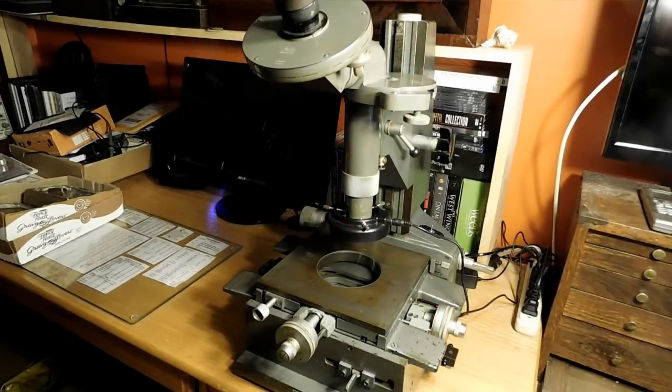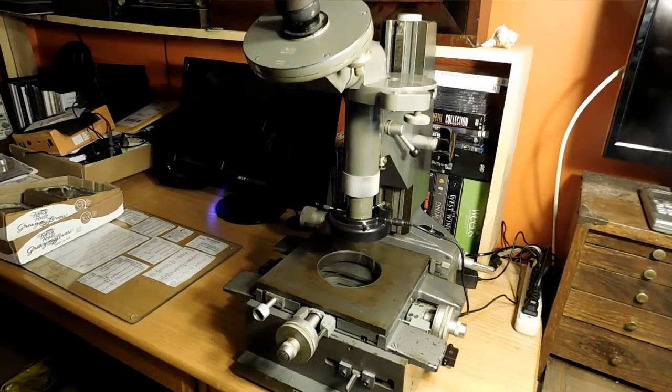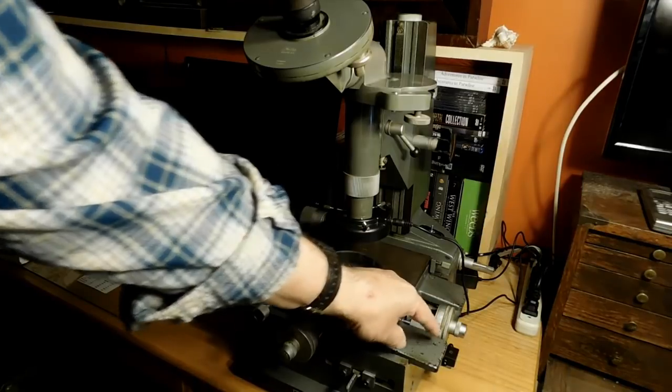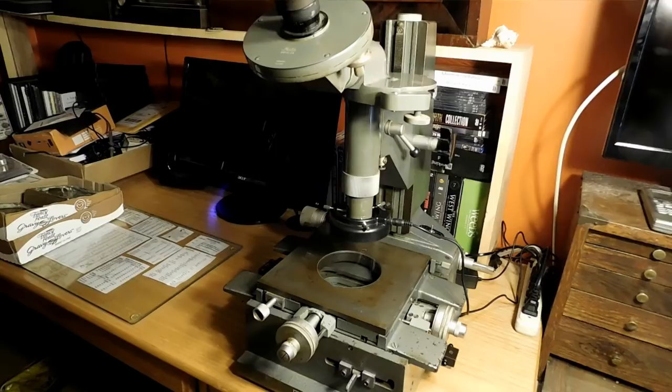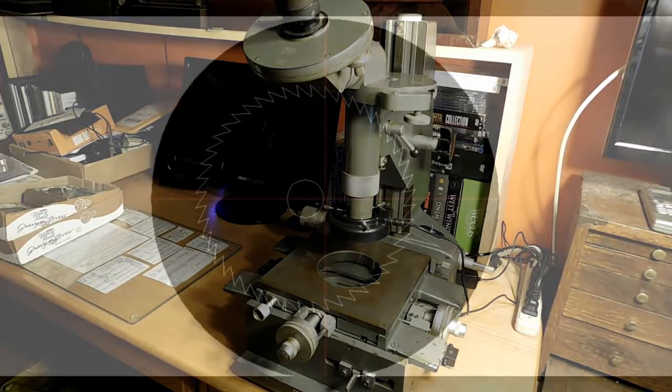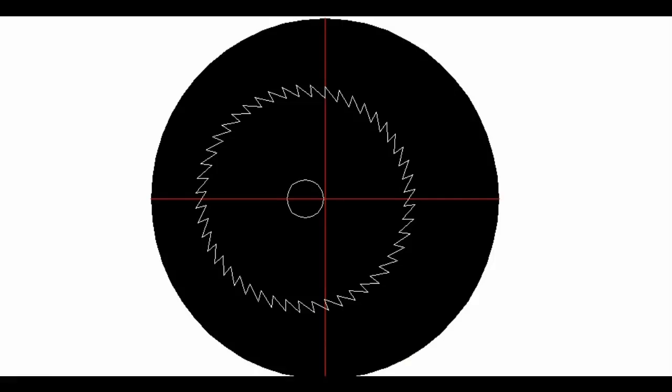The next measurement that we need to get is the offset, and to get the offset we're going to be using the x-axis micrometer scale there. As we look through it, we'll just move over and take a measurement, and I'll show you now in AutoCAD how we do that.